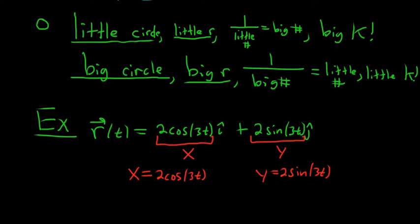Solving for cosine on the left-hand side, we have cosine of 3t equals x over 2. And solving for sine here, we have sine of 3t equals y over 2.